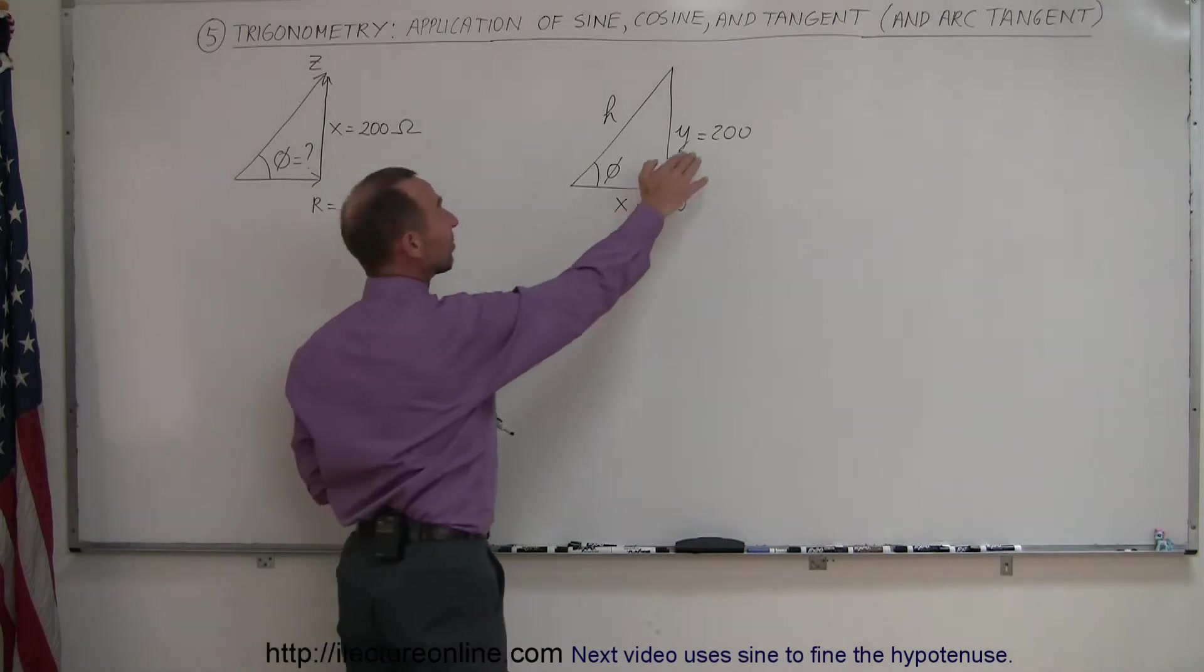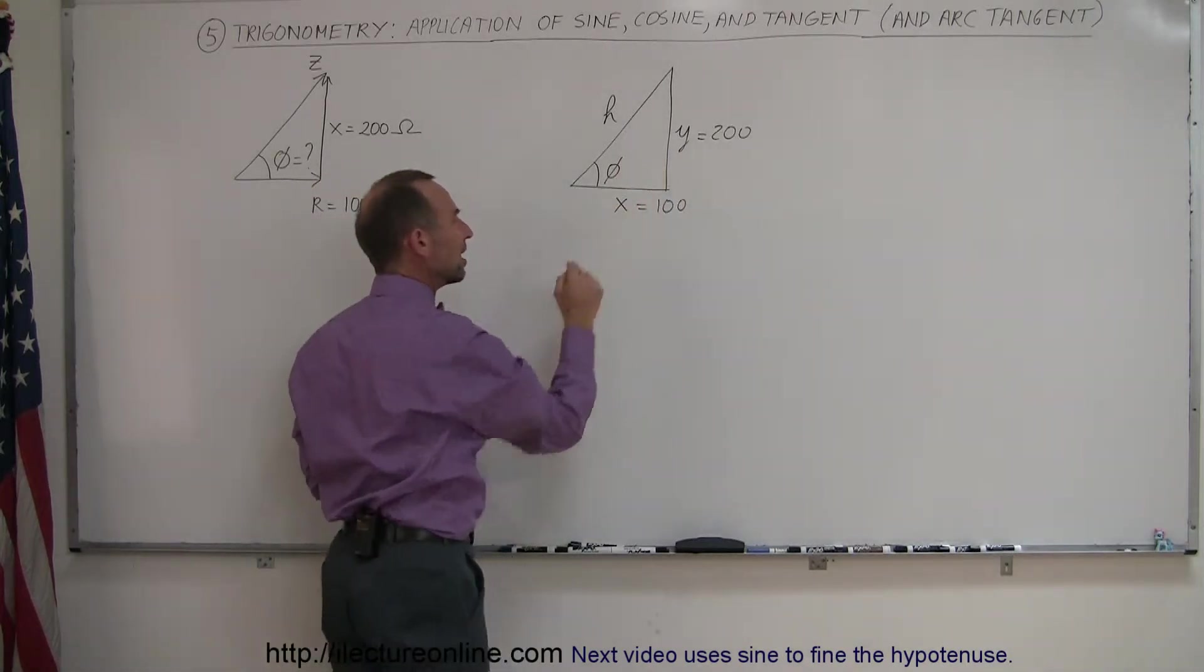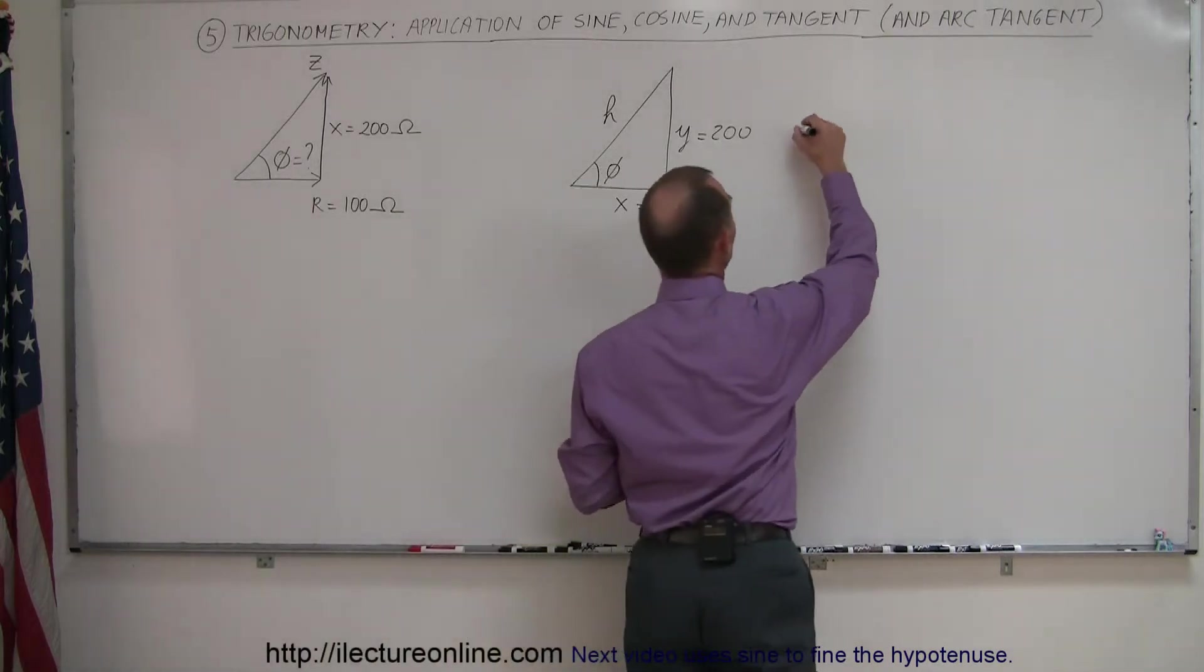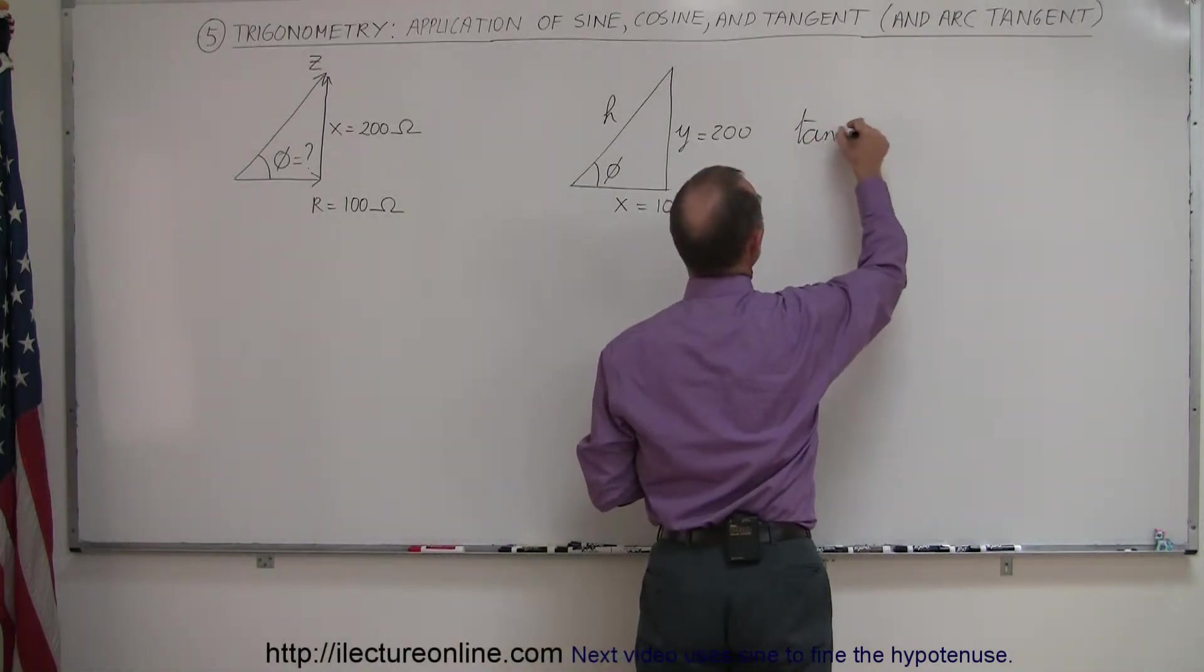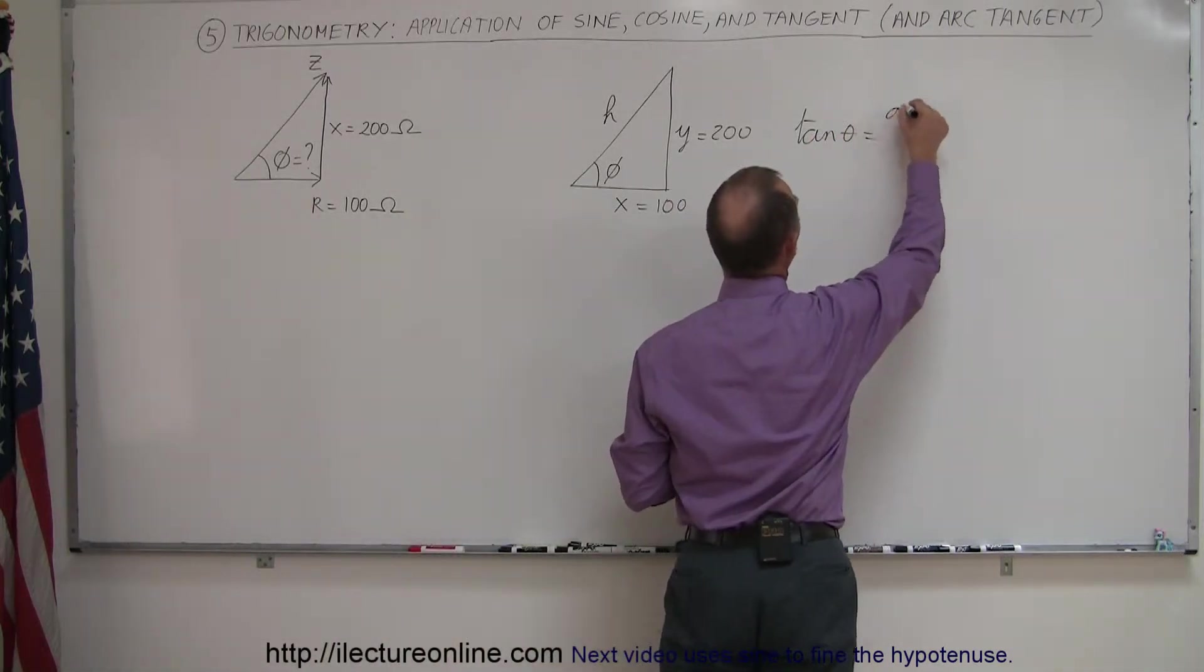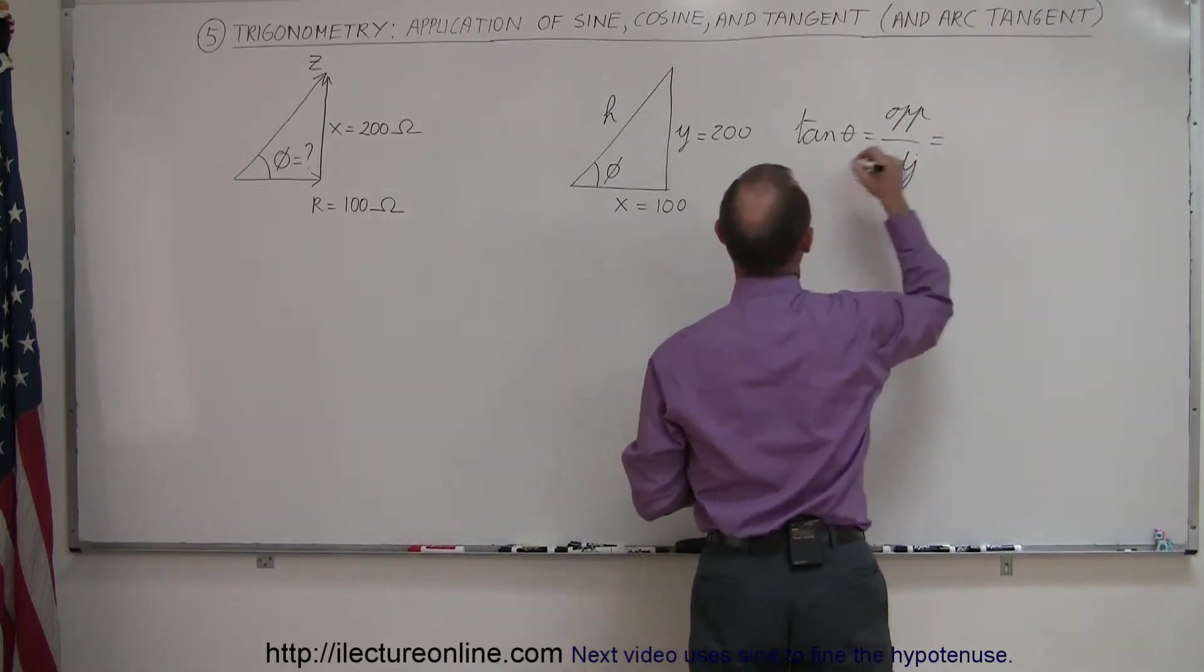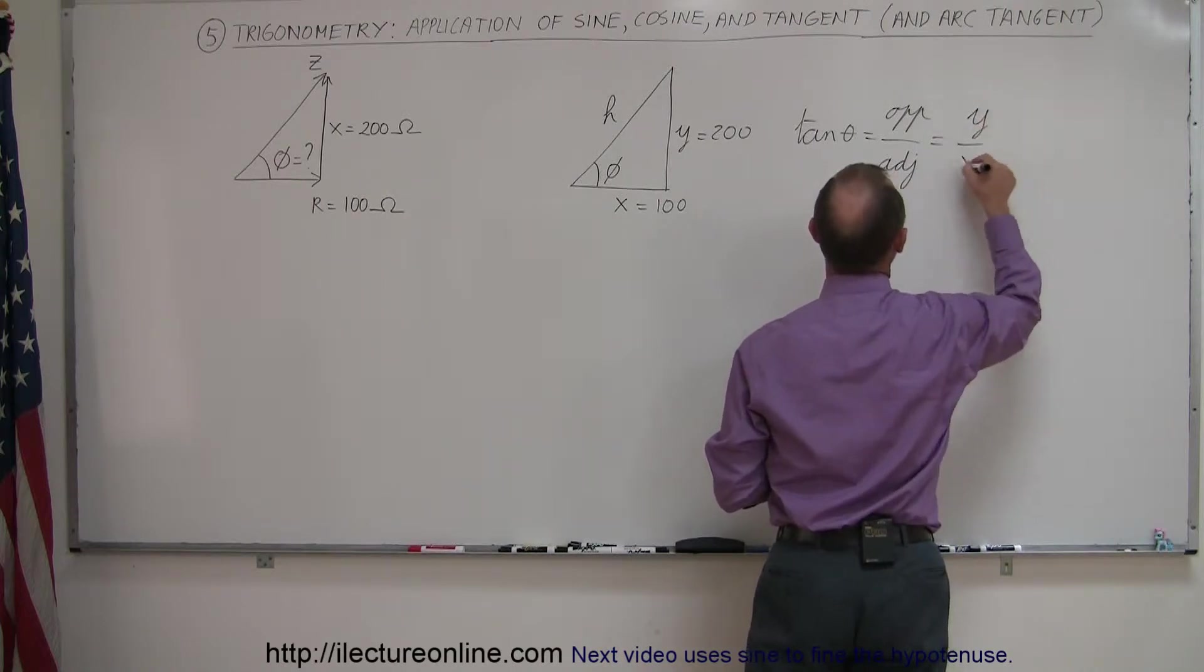Now, since that's the opposite side to the angle, this adjacent side to the angle, we know just the right function. The tangent of theta, by definition, is equal to the ratio of the opposite side over the adjacent side. And in this case, the opposite side would be y, and the adjacent side would be x.